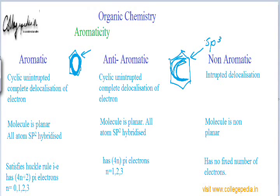Any cyclic compound will fall into one of these three categories: aromatic, anti-aromatic, or non-aromatic. Now we will have a rigorous problem-solving session where we will solve many problems and learn to identify, when we look at a compound, whether it is aromatic, anti-aromatic, or non-aromatic.